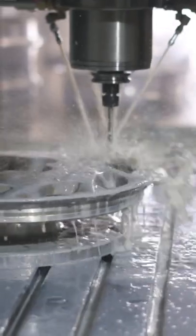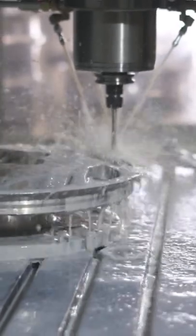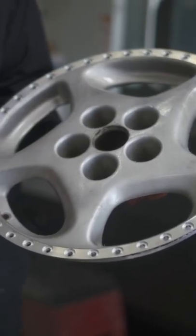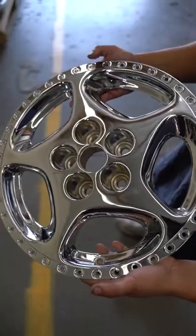They take the Dinglebop and they push it through the Grumbo where the Fleab is rubbed against it. It's important that the Fleab is rubbed because the Fleab has all of the Fleab juice.